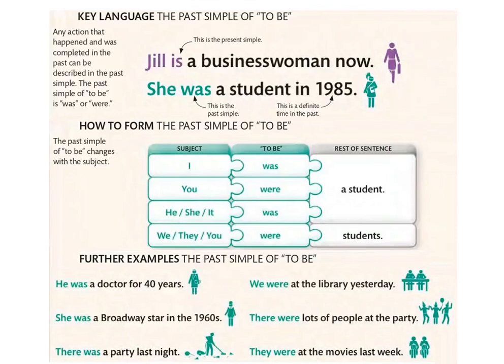Let's see more examples. He was a doctor for 40 years. She was a Broadway star in the 1960s — نجمة في Broadway، وهو مسرح معروف في New York في الستينيات. There was a party last night — كان فيه حفلة last night.